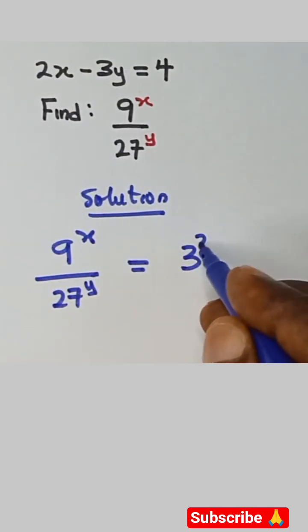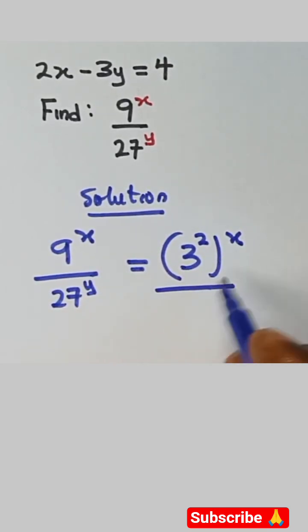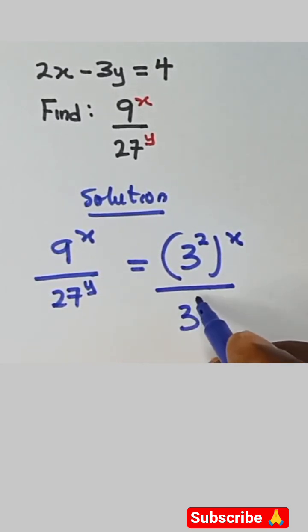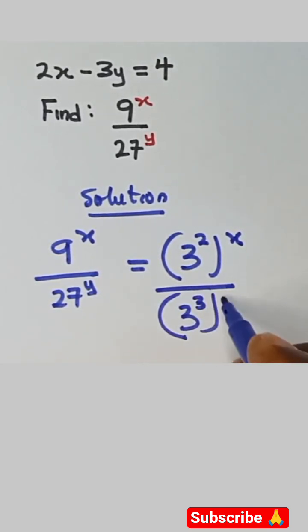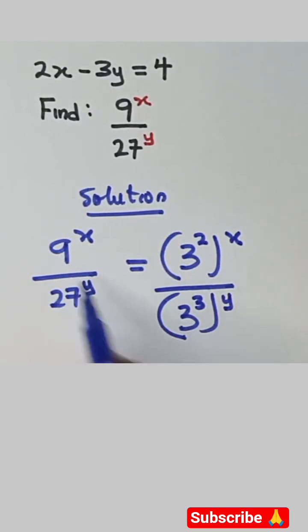So we can write 9 as 3 raised to power 2, and 27 as 3 raised to power 3. So 3 raised to power 2 is 9, and 3 raised to power 3 is 27.